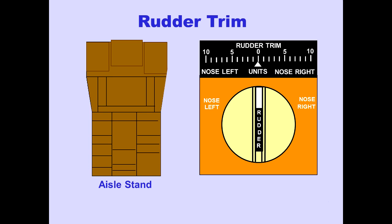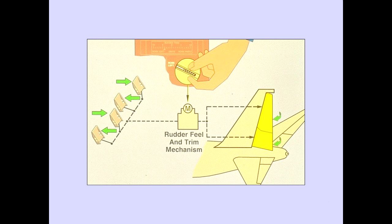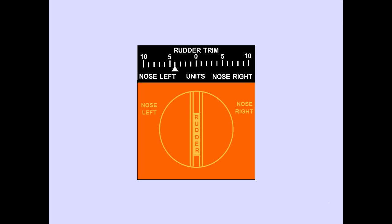The rudder trim control and rudder trim indicator are located on the aisle stand. The rudder trim control is spring-loaded to the center-off position. Rotating the control to nose left or nose right causes the rudder feel and trim mechanism to move the rudder neutral point in the desired direction. The rudder pedals move with trim inputs. The rudder trim indicator displays units of rudder trim.